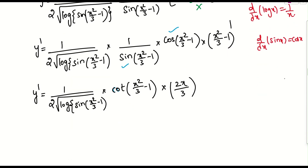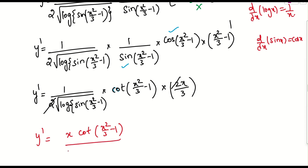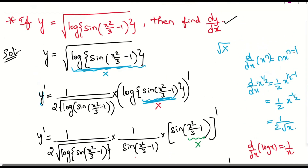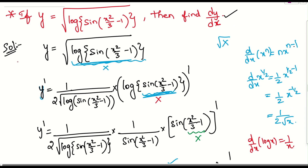If you check it properly, numerator 2 and denominator 2 can be cancelled. So I can rewrite this: y dash equals — numerator will be x, into cot of x squared by 3 minus 1, and denominator 3 is left over, into root of log of sin of x squared by 3 minus 1. This is the final answer, because we have done everything perfectly with the help of formulas. This is Method 1.